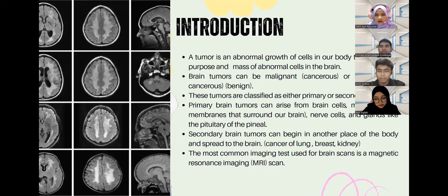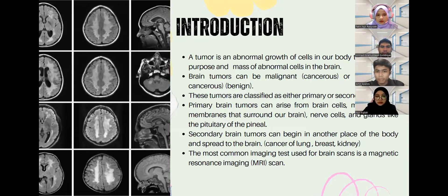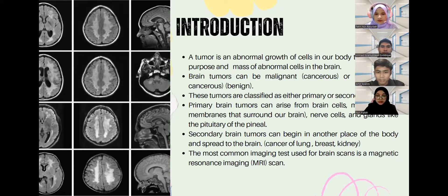This is the introduction. A tumor is an abnormal growth of cells in our body that serves no purpose — a mass of abnormal cells in the brain. Brain tumors can be malignant or benign. These tumors are classified as either primary or secondary. Primary brain tumors can arise from brain cells, the meninges — the membrane that surrounds our brain — nerve cells, and glands like the pituitary. Secondary brain tumors can begin in another part of the body and spread to the brain.